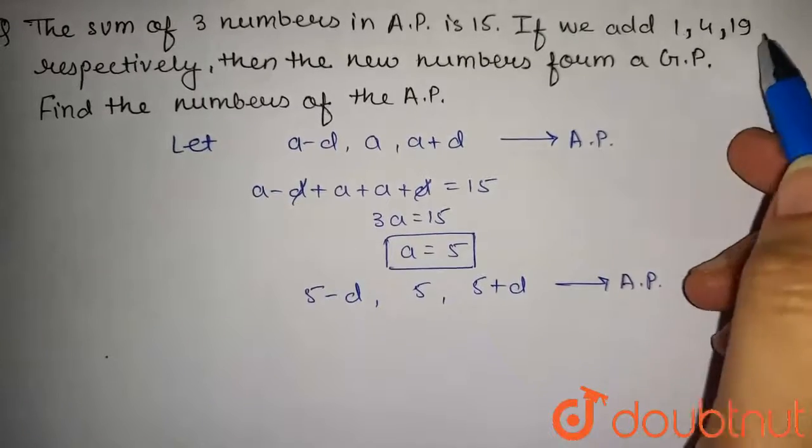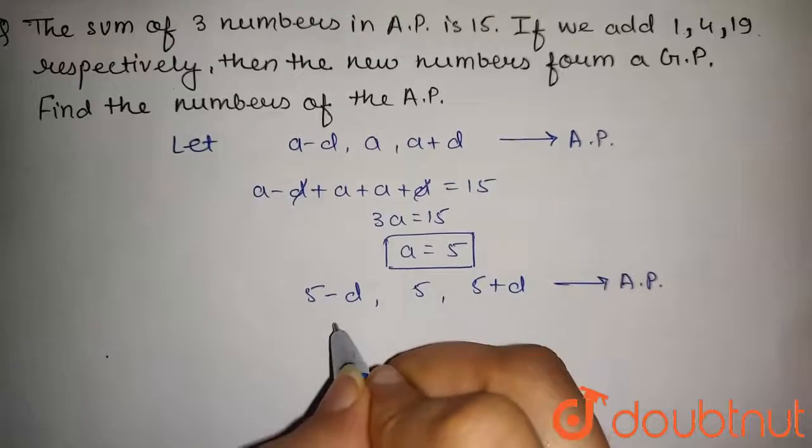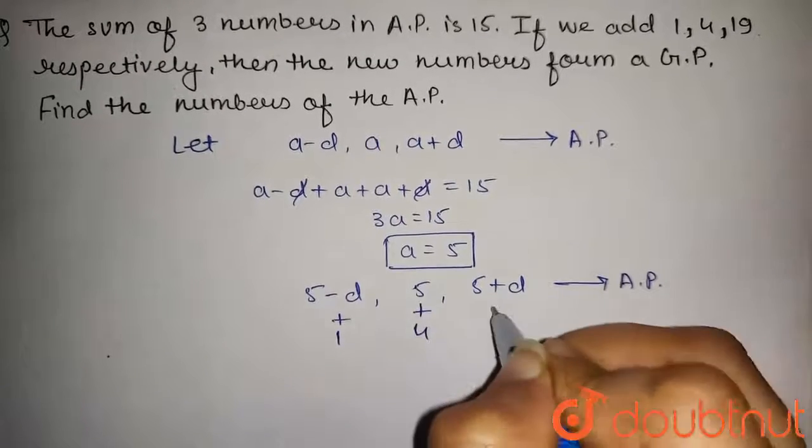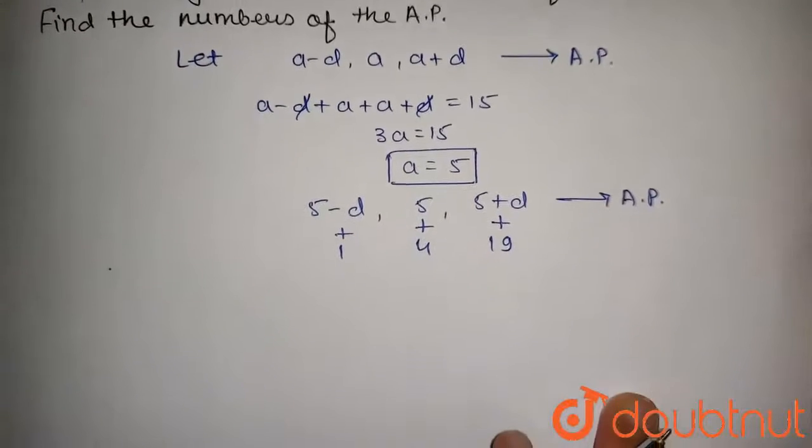As given in the question, if we add 1, 4, 19 respectively, then the new numbers form a GP. So if we add 1 in this, 4 in this and 19 in this, the resultant will be in GP.